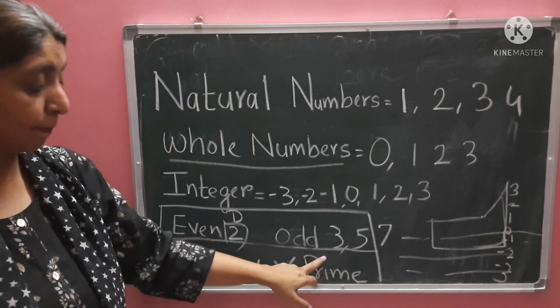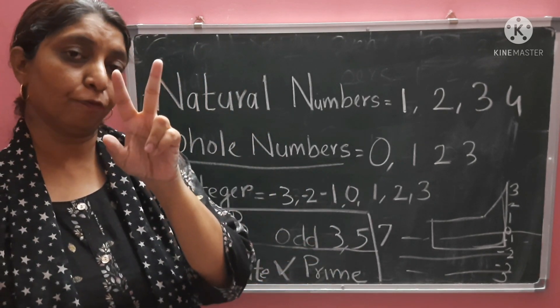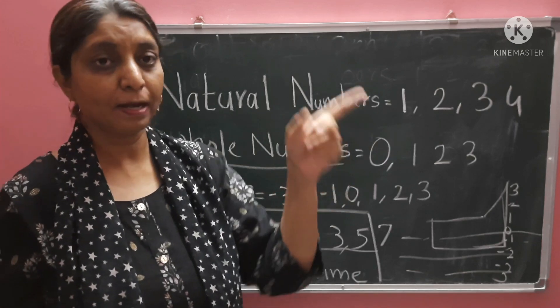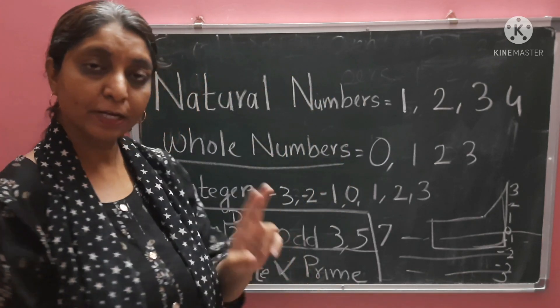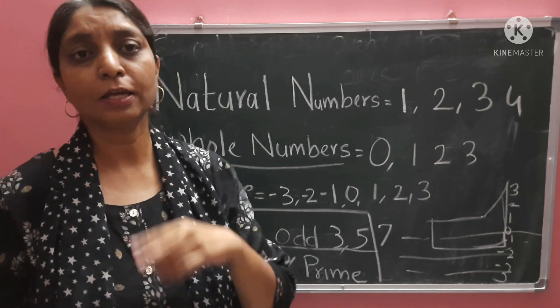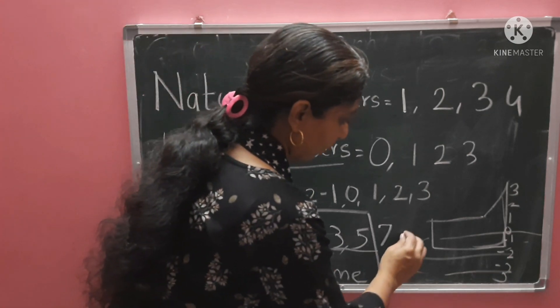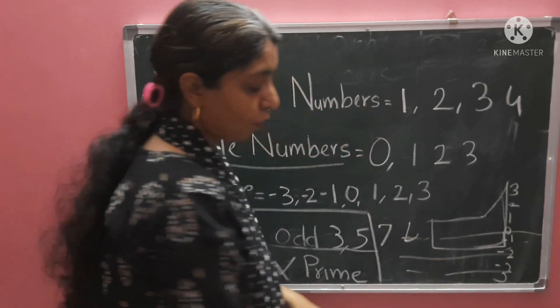That means prime numbers have only two factors - two tables. Their own table and the table of 1. If there are more than two factors, then it's composite. For example, 4.